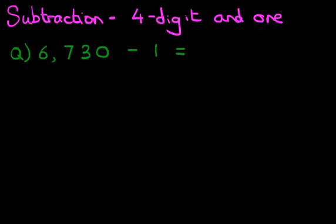6,730 minus 1. Now, the first stage is we're going to rewrite this question in the vertical format. So let's do that over here. 6,730 minus 1.